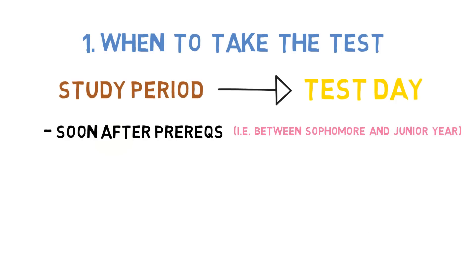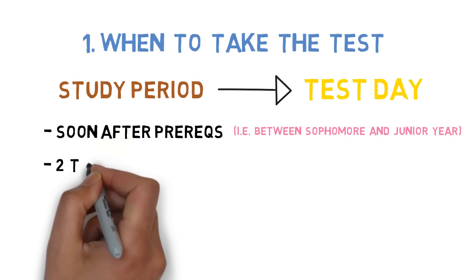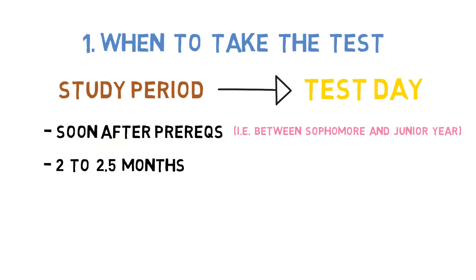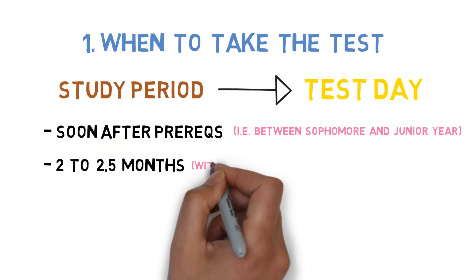For me, I studied between sophomore and junior year during the summer. This was best for me, but see what works best for you and your schedule. As for duration, I recommend you set aside between two and two and a half months of dedicated study time.